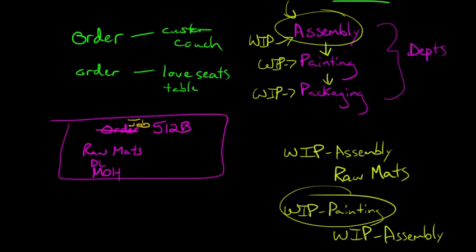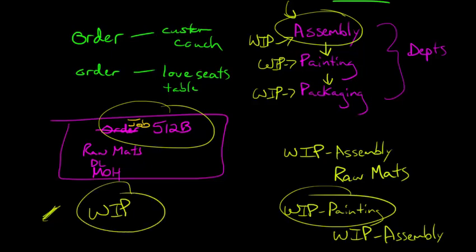And now with job order costing over here, right, we just have one WIP account, just one work in process account. And all the jobs, all the information, everything, it flows through this one WIP account instead of process costing where we've got a WIP account for every single department.